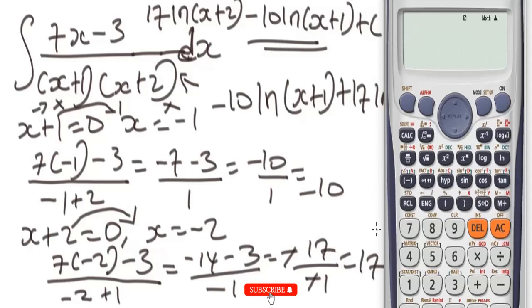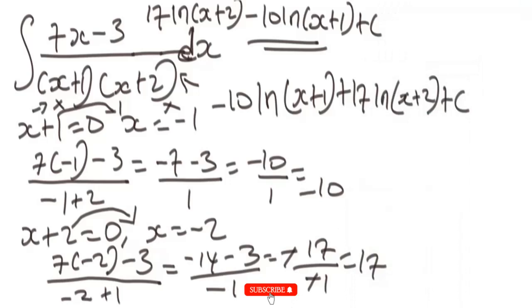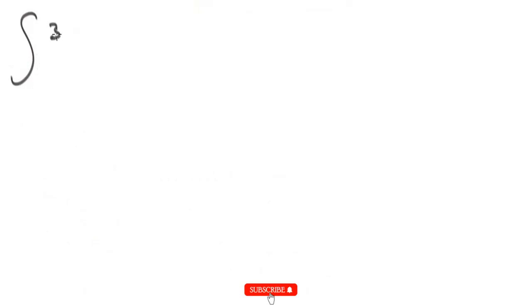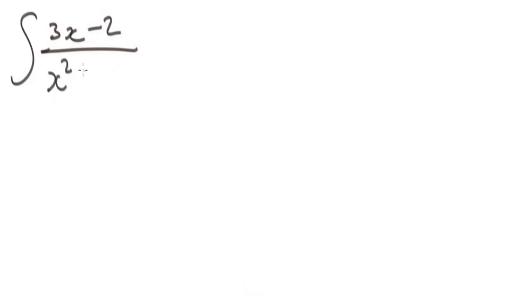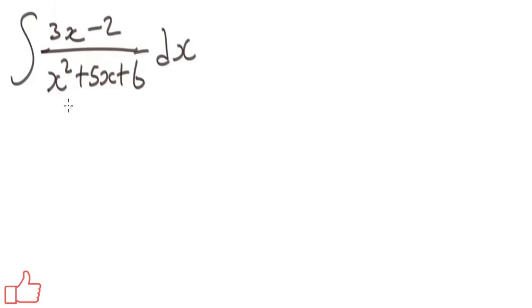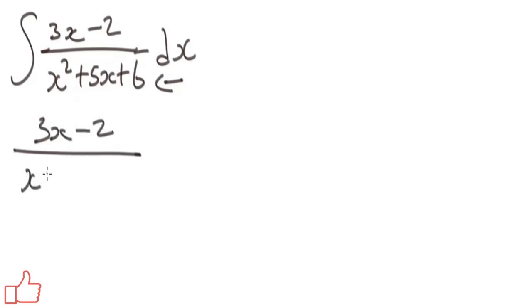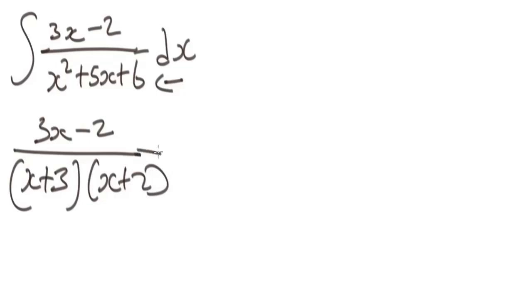Now let's work one more example. We are given the integral of (3x - 2) over (x² + 5x + 6) dx. To apply the same shortcut trick, first factorize the denominator. Factorizing x² + 5x + 6 gives (x + 3)(x + 2). So the integral becomes: (3x - 2) over (x + 3)(x + 2) dx.